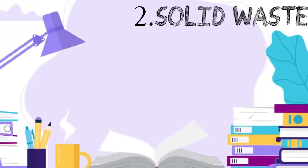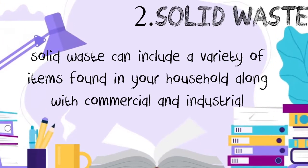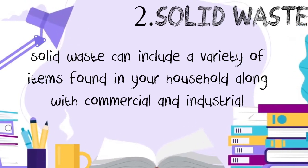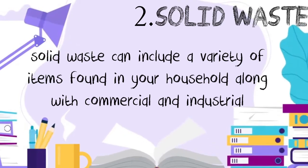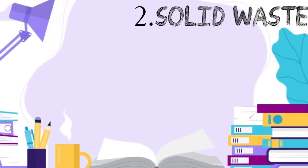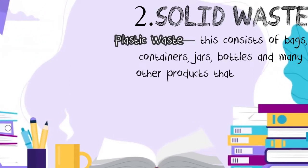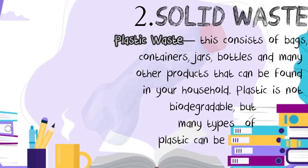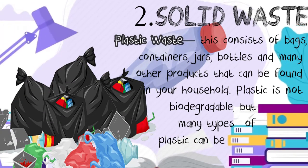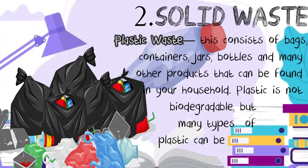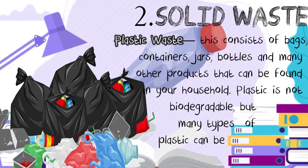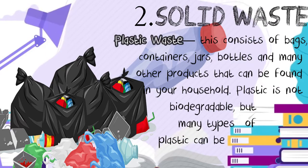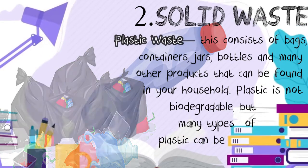Solid waste can include a variety of items found in your household along with commercial and industrial locations. Plastic waste consists of bags, containers, jars, bottles, and many other products that can be found in your household. Plastic is not biodegradable, but many types of plastic can be recycled.